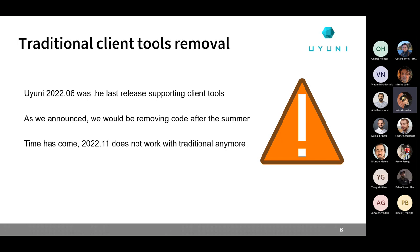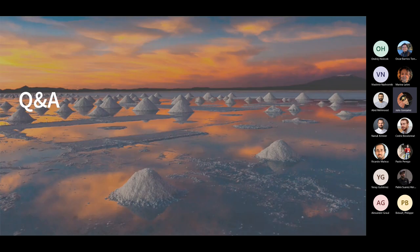There is a final warning about the removal of the traditional client tools. We announced already for 2022.06 that that was going to be the last release supporting the client tools, and that we would be removing code after summer. That is something that is already happening now. As of 2022.11, Uyuni does not work with traditional clients anymore. If you update to 2022.11 and still have traditional clients, make sure you migrate them to salt minions. Instructions about how to do it are at the documentation.